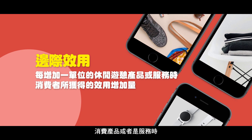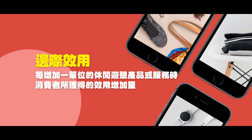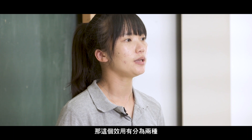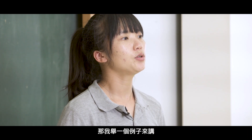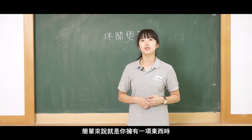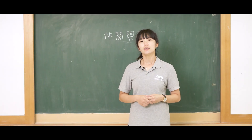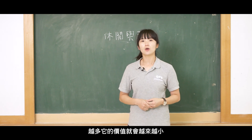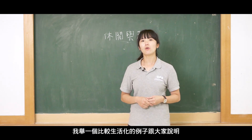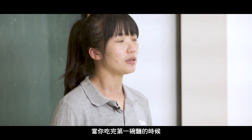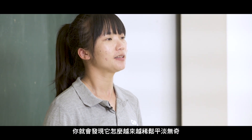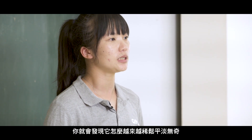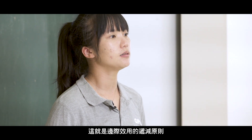接下來跟大家介紹第二個名詞，邊際效用。意思就是每增加一個單位的消費產品或者是服務時，消費者所累積到的效用就會增加。效用有分為兩種，一個是遞增效用，第二個是遞減效用。簡單來說就是你擁有一項東西時，越多它的價值就會越來越小。當你吃完第一碗麵的時候覺得超級好吃，但是你吃到第六碗的時候，你就會發現它怎麼越來越平淡無奇，這就是邊際效用的遞減原則。